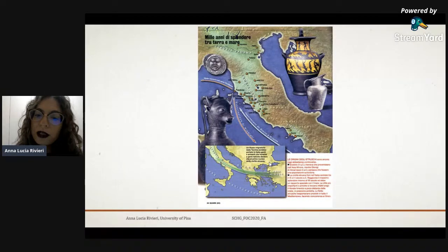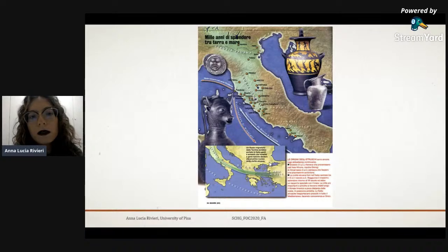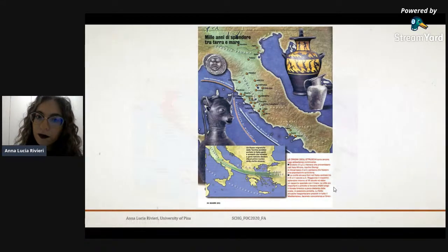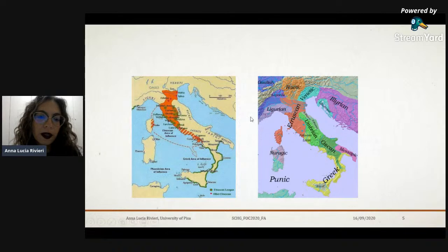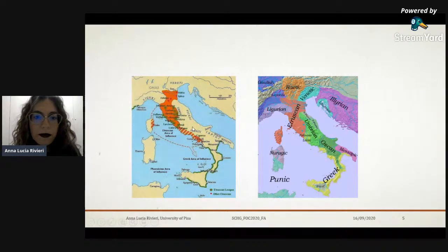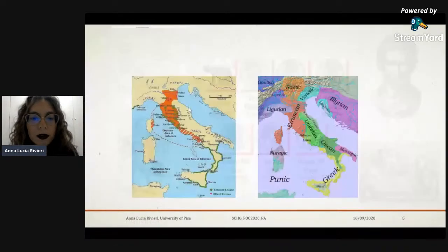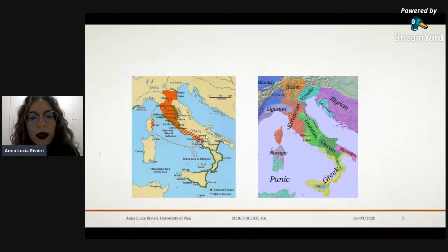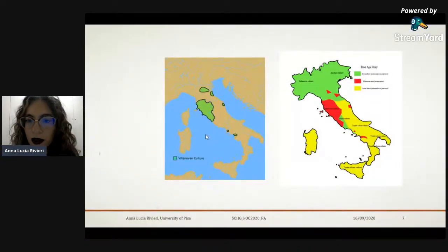So their origin is still debated, but most scholars believe they originated directly from another italic society that lived there well before the Romans came to power — and that was the Villanovian culture. The Villanovian culture people, as you can see on the map, easily overlapped with the region that would be later occupied by the Etruscans.